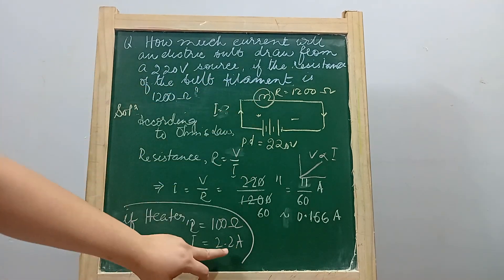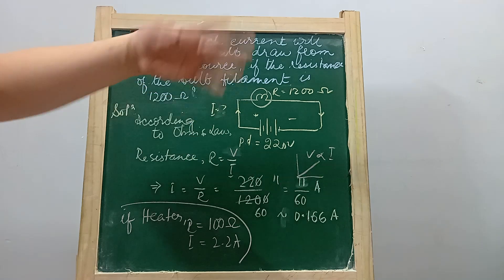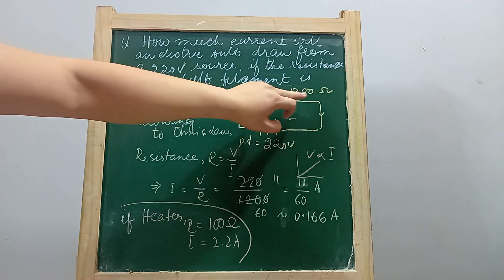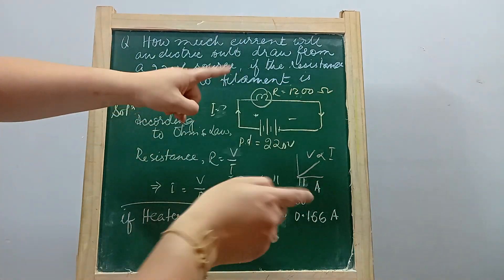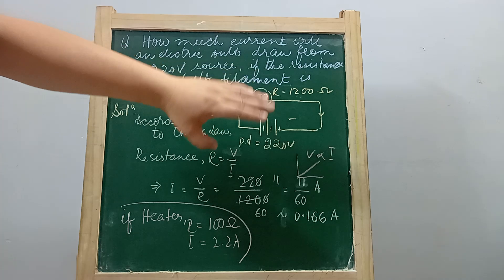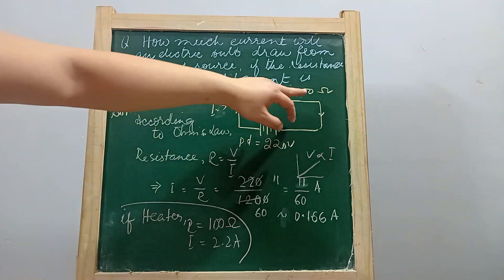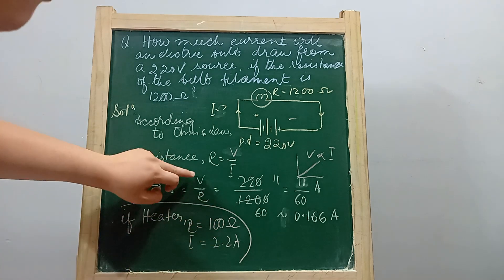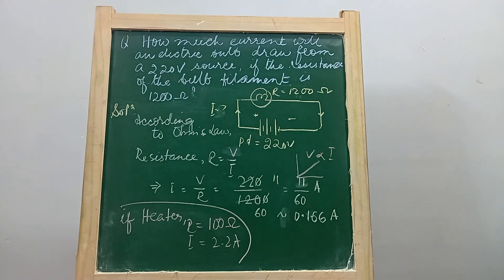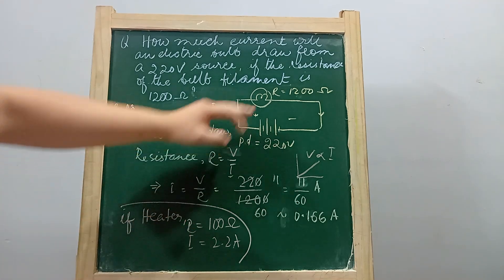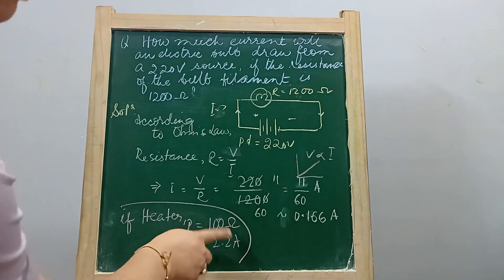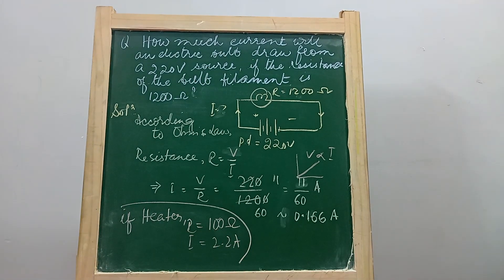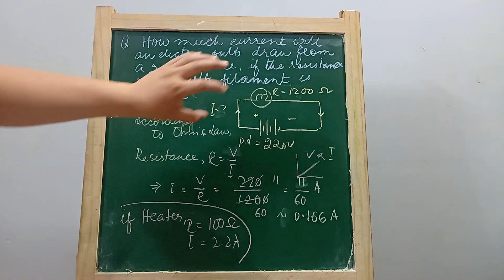When resistance is low, a huge amount of current flows. Resistance is the ratio of voltage to current — at 1200 ohms, the voltage is 1200 times the current, which is why the current was very low at 0.166 ampere. At 100 ohms, the voltage is only 100 times the current, so the current has increased to 2.2 ampere.